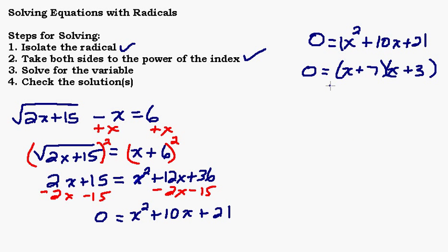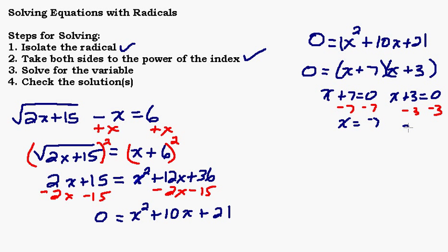We have two things multiplying together to equal 0, so either the first factor or the second factor must equal 0. To make the first factor 0, x would have to be negative 7. To make the second factor 0, x would have to be negative 3. Both of these give a solution to this quadratic equation. Now we're on step 4 — check our solutions — because when you square both sides you can get what's called an extraneous root, so we need to verify.